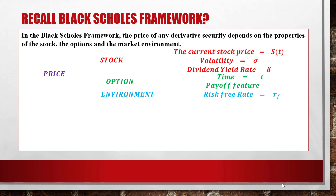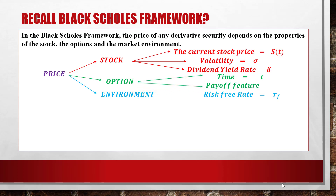Before we go into these three main points, let's take a look at the Black-Scholes framework. In the Black-Scholes framework, the price of any derivative security depends on the properties of the stock, the option, and the market environment. For the stock it depends on three factors: the current stock price S(t), the volatility sigma, and the dividend yield rate delta. The option features depend on the time and the payout feature, and the environment.